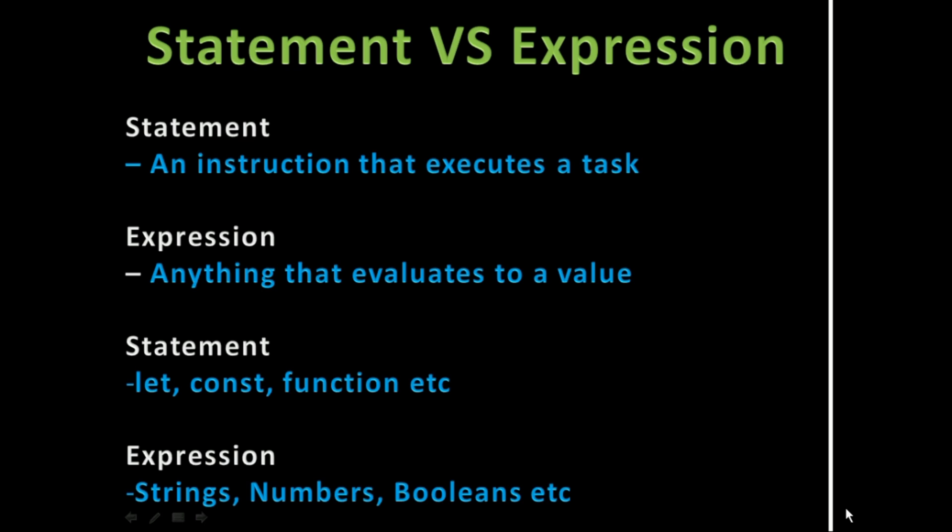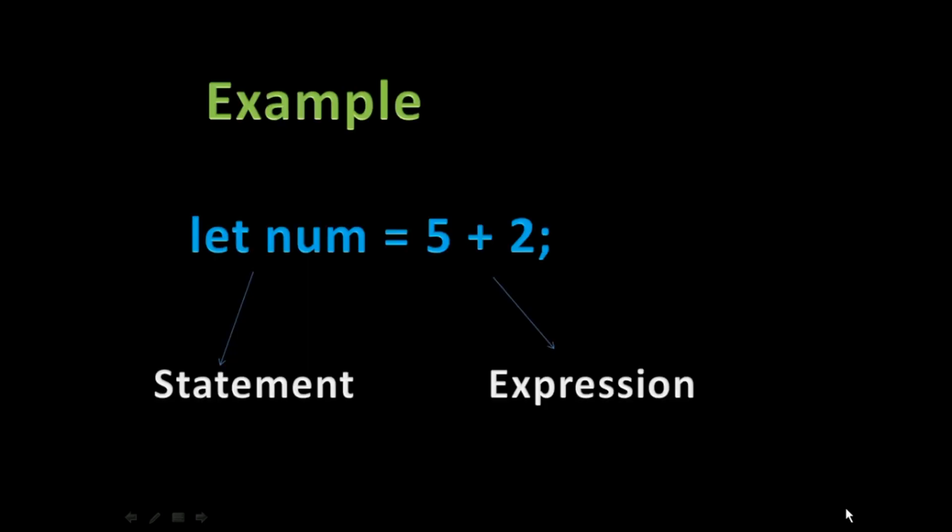To help you understand this clearly: to my left hand side you have statements and to the right hand side you have expressions. For example, 'let num' — we are declaring a variable, and that is a statement. Declaration of a variable, function definition, and so on are statements. Now, 5 + 2 — five is a number, two is a number, plus is an arithmetic operator — the three things together evaluate to seven, and that is a value, making it an expression.